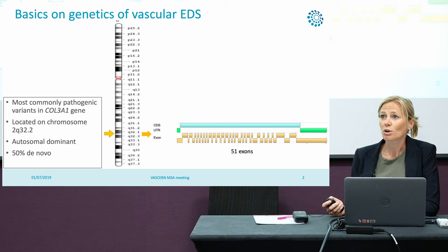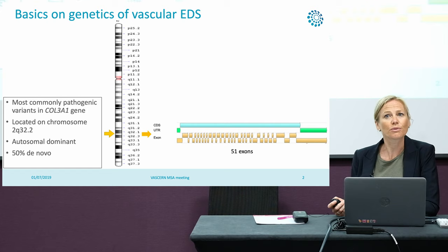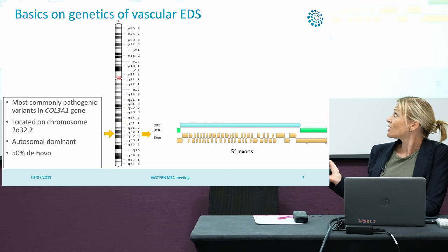It's an autosomal dominant condition and most commonly, in about 50% of occasions, de novo variants are found and there's a lack of family history.